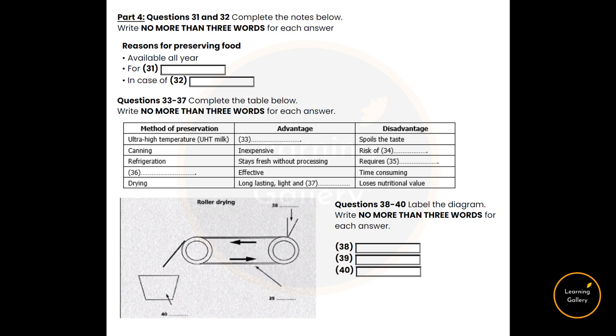Another method of preserving food is by drying it. Most foods are 75% to 90% water. So if you remove the water, the microorganisms simply can't survive. When food is dried, it not only lasts a long time, but it also becomes much lighter, which is a big advantage, as this makes it cheap to store. Though some people argue that valuable nutrients are lost in the process.